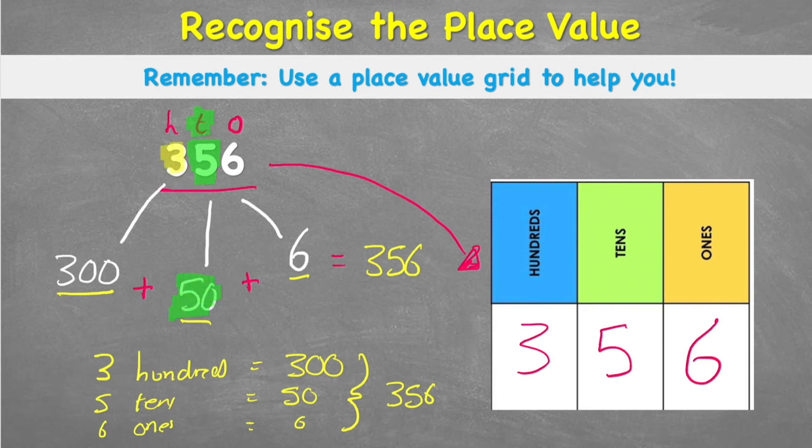And this 3 in the 100s column isn't just a 3, because it's in the 100s column, it actually has a value of 300. And because our 6 is in the 1s column, it has a value of only ones, so 6 ones is just 6.